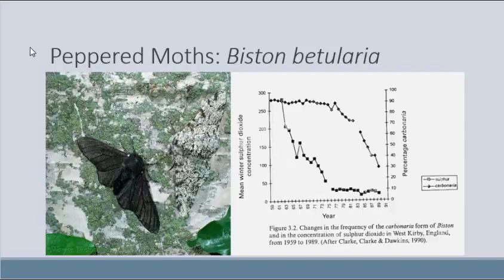The peppered moths of London are another excellent example of rapid evolution. For a long time, London's countryside had light-colored trees covered in healthy lichens. Because the trees were light colored, most of the moths were light colored. Along came the industrial revolution, and with an increase of sulfur dioxide all the trees became quite dark — looking like the dark moth on the left rather than the pale moth on the right.